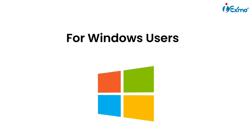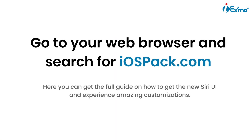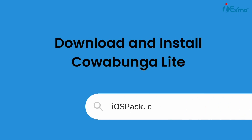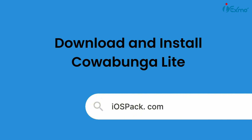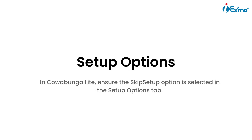Windows users, here's your guide. Open your web browser, search for iospack.com, and get Cowabunga Light from the official site. Use a USB cable to connect your iPhone or iPad to your PC. In Cowabunga Light, make sure the Skip Stop option is selected in the Setup Options tab. Then navigate to the Cowabunga Light workspace in File Explorer and find your UID.